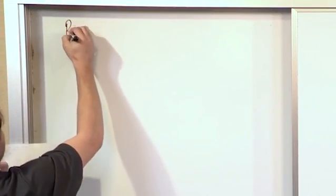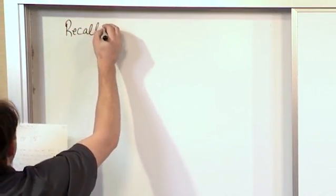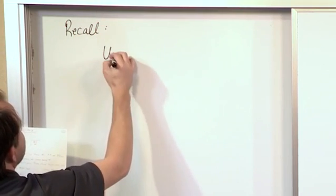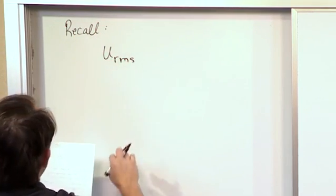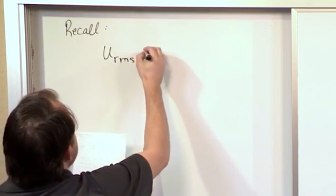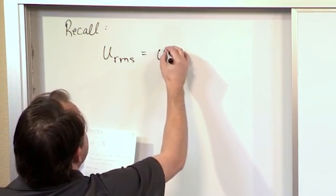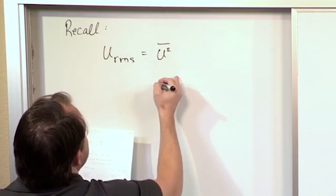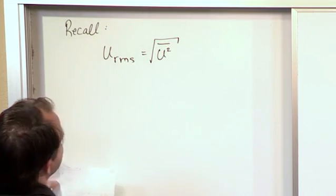So the first thing to note is something that we learned in the last section. So I'll just say recall that the velocity RMS, root mean squared, has to do with the fact that basically we have the squared velocity, we take the mean of it, and then we take the square root of that.